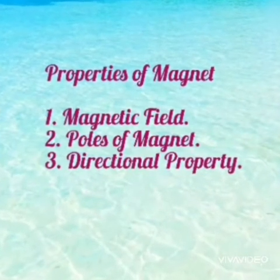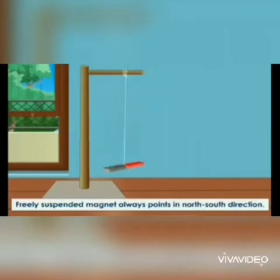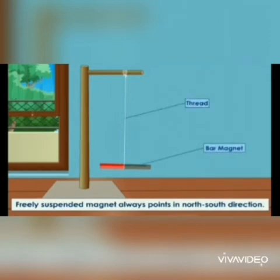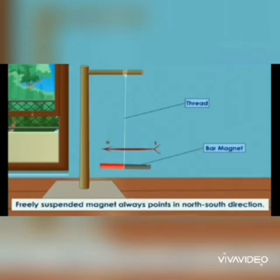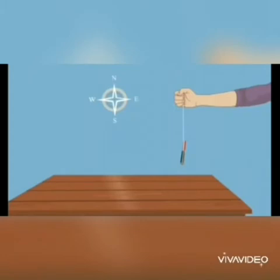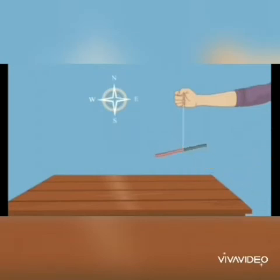Third property of a magnet is the directional property. A magnet always points in the north-south direction when suspended freely. The end of the magnet that points towards the north side of the earth is called the north pole. And the other end of the magnet pointing towards the south is called the south pole.